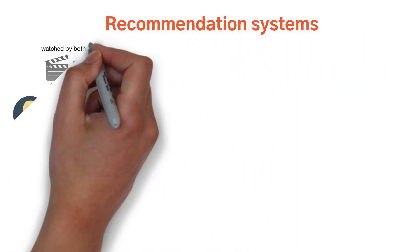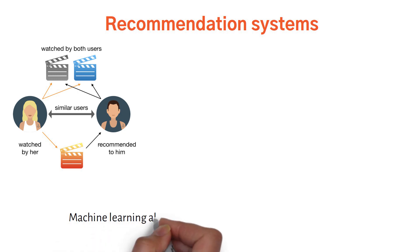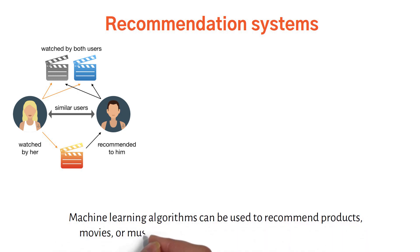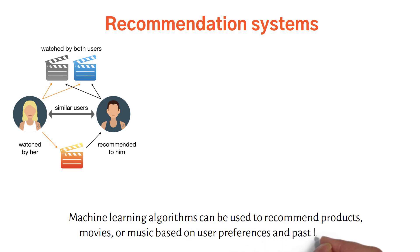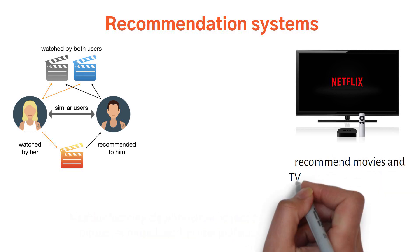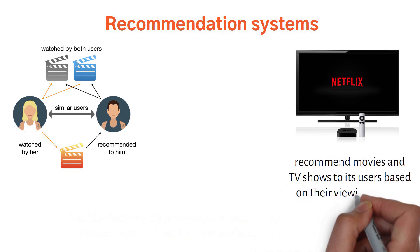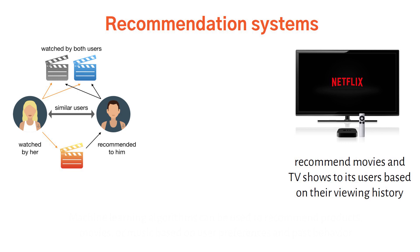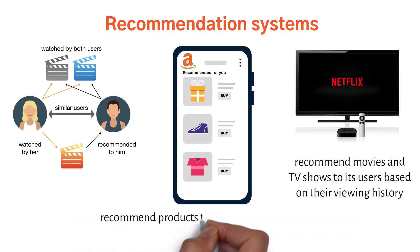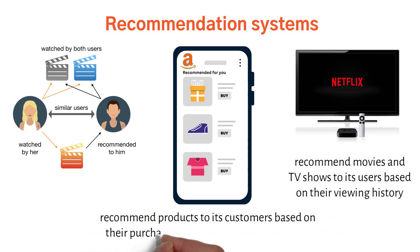Recommendation systems: machine learning algorithms can be used to recommend products, movies, or music based on user preferences and past behavior. For example, Netflix uses machine learning algorithms to recommend movies and TV shows based on viewing history, and Amazon uses similar algorithms to recommend products based on purchase history and browsing behavior.